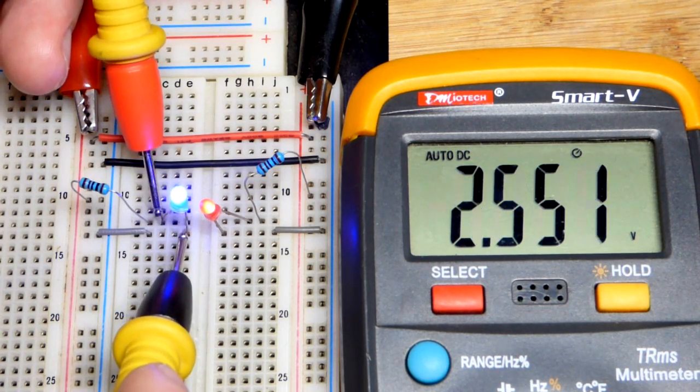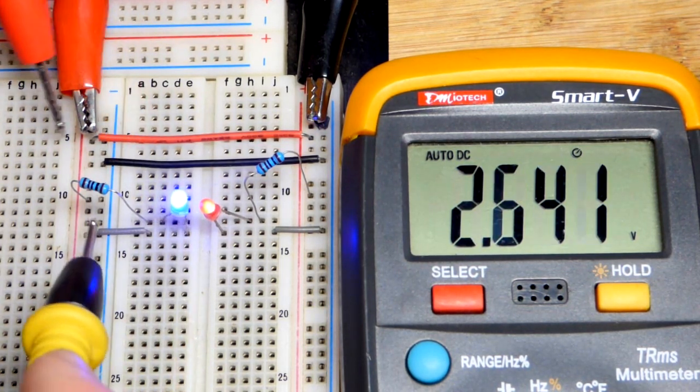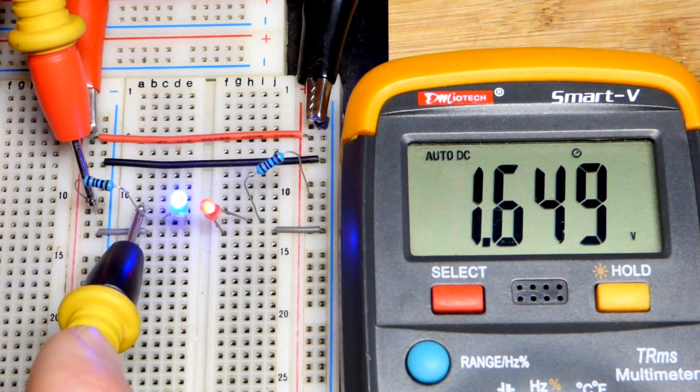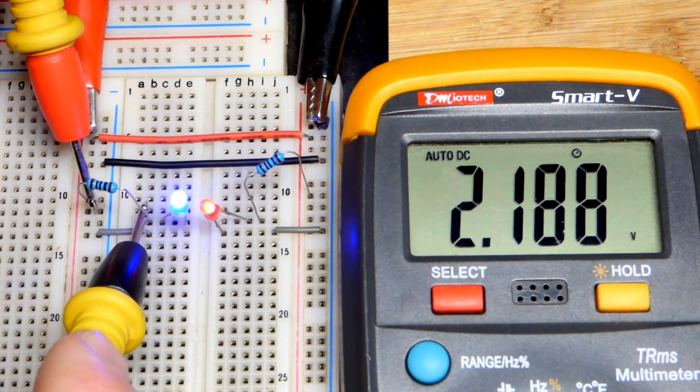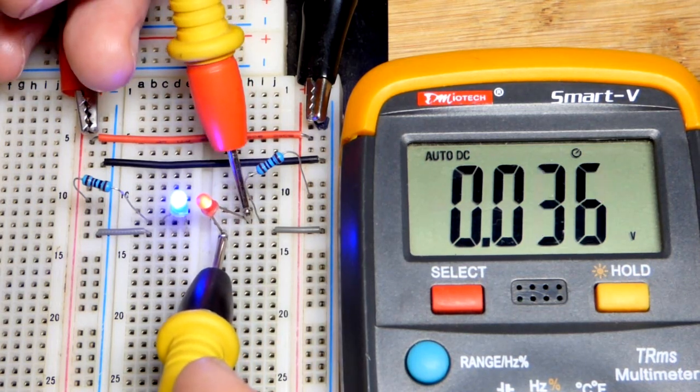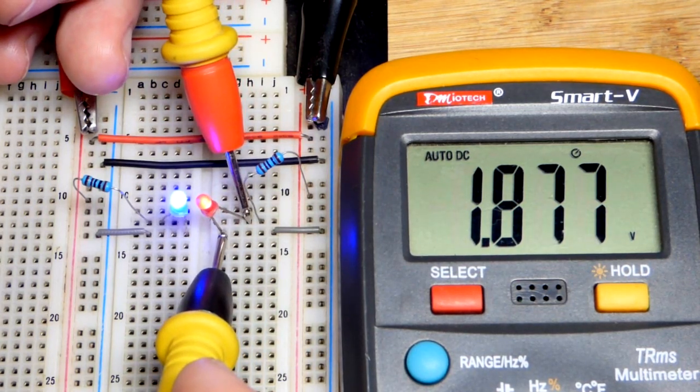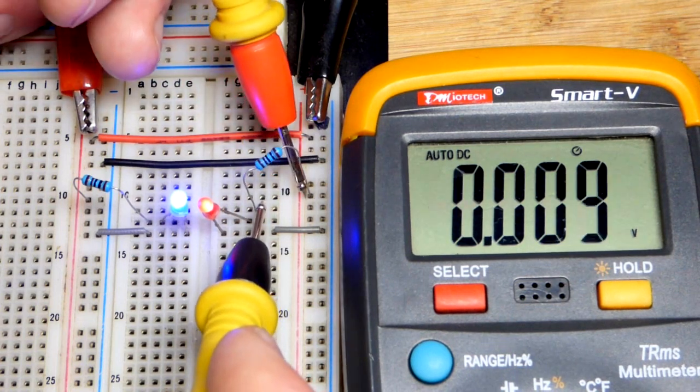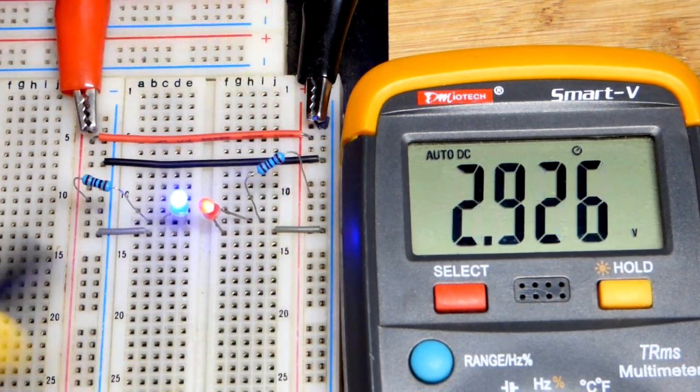The blue LED actually drops about 3 volts. So we can see out of that 5 volts, 3 volts is across the blue LED leaving about 2 volts across the resistor that sets the current. Whereas the red LED drops about 2 volts as you can see right there, leaving about 3 volts across the resistor that sets the current.